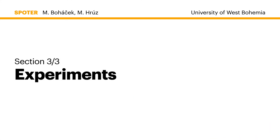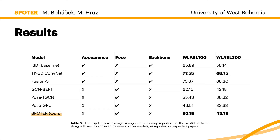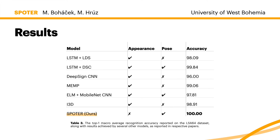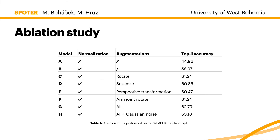Let's now look at the experiments. We trained SPOTR on the WLASL dataset and report results in this table. The first three rows denote appearance-based methods, and the next three rows contain pose-based methods, with SPOTR in the last line. We establish state-of-the-art results within pose-based models and come very close to the appearance-based baseline. For the LSA64 dataset, we establish overall state-of-the-art by achieving 100% accuracy. We also conduct an ablation study showing that simply adding the normalization scheme dramatically increases accuracy, and subsequent lines demonstrate the importance of individual augmentations.